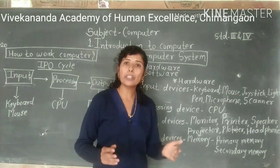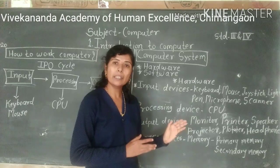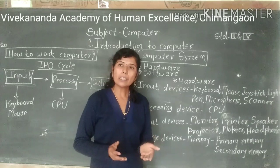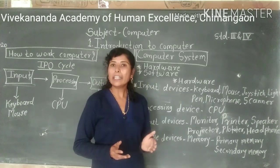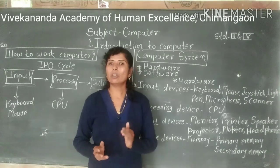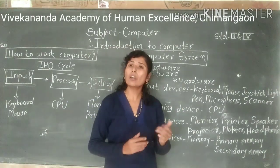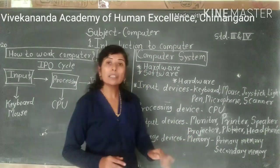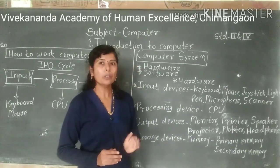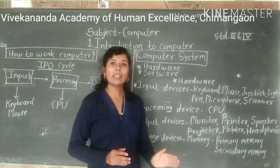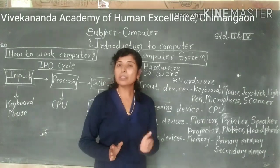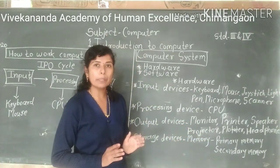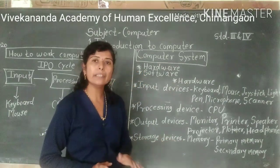In the processing device, inside the CPU, there are parts: ALU and MPU. ALU means Arithmetic and Logical Unit — it performs calculations and arithmetic and logical operations. There is also a memory unit where data and information on the computer is saved. There are two types of memory — primary and secondary storage.